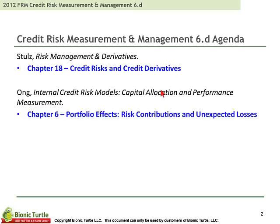I'll just try to point out what's important for our purposes. Chapter 6 is an old reading from an old text by Michael Ong, where we bring together the unexpected loss from the individual credit-sensitive asset into the portfolio. So we look at portfolio expected loss, portfolio unexpected loss, and then risk contribution as an example of the first derivative applied to the credit portfolio.